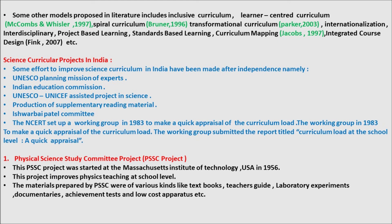The working group submitted a report titled 'Curriculum Load at the School Level: A Quick Appraisal.' The Physical Science Education Committee (PSSC) project was started at the Bachelor's Institute of Technology, USA in 1956. This project improved physics teaching at the school level. Materials prepared by PSSC were of various kinds: textbooks, teacher guides, laboratory experiments, documentaries, achievement tests, and low-cost apparatus.